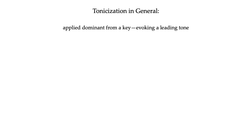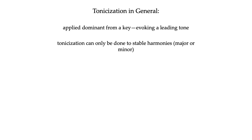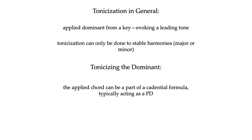To review: tonicization involves applied dominance — borrowing a key's dominant and evoking its leading tone. Tonicization can only be applied to stable harmonies — major or minor chords. Specifically, when tonicizing the dominant, the applied chord can function as part of the predominant in a cadential formula — that falling fifth from predominant to dominant to tonic — or the secondary chord can expand tonic, as in the last example, because tonic expansion involves one-and-five motion, so tonicization of five can naturally be part of that as well.